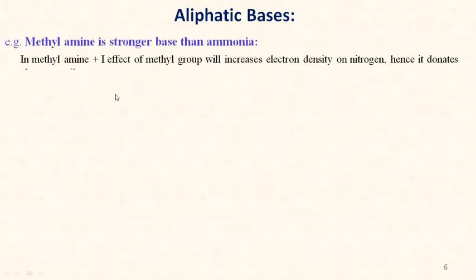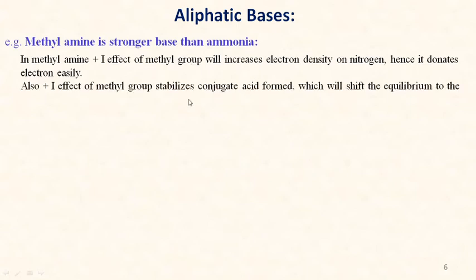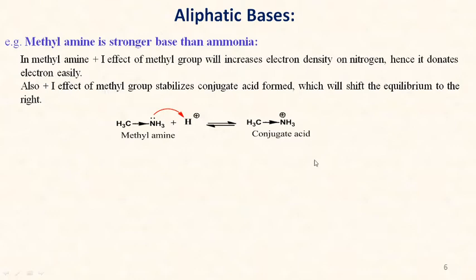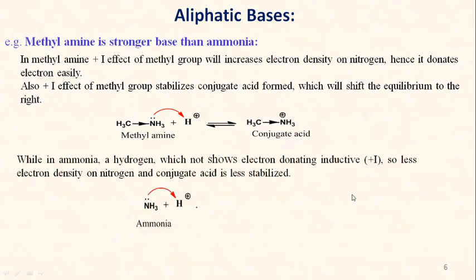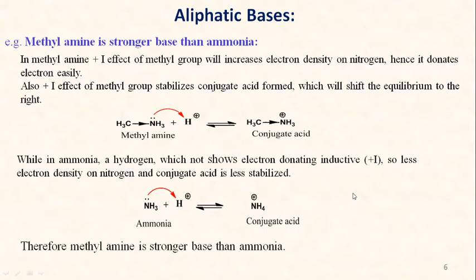For example, methyl amine is a stronger base than ammonia. In methyl amine, the electron-donating inductive effect of the methyl group increases electron density on nitrogen, so it can donate electrons very easily, and the conjugate acid is stabilized by the electron-donating inductive effect. In ammonia, hydrogen does not show an electron-donating inductive effect, so less electron density is available and the conjugate acid is less stabilized. Therefore methyl amine is a stronger base than ammonia.